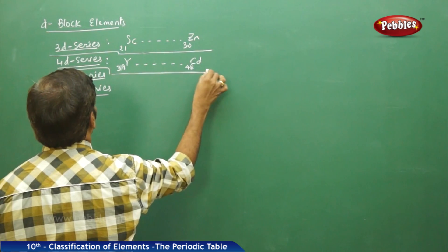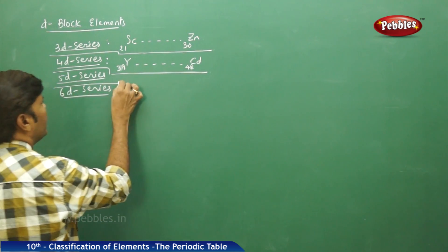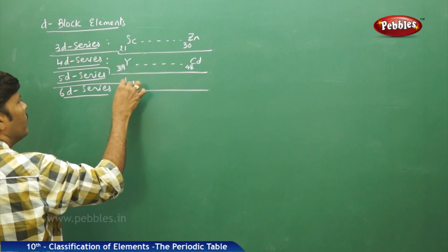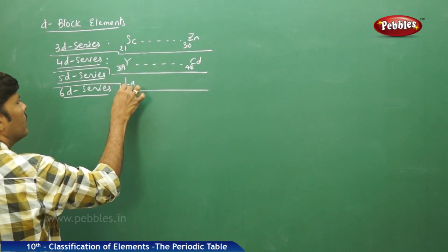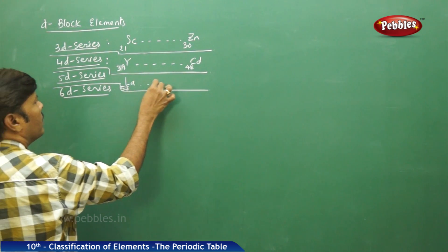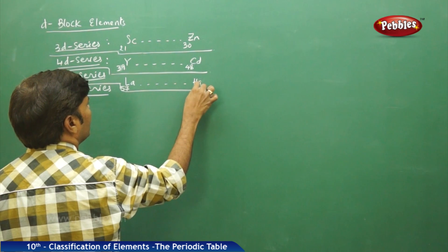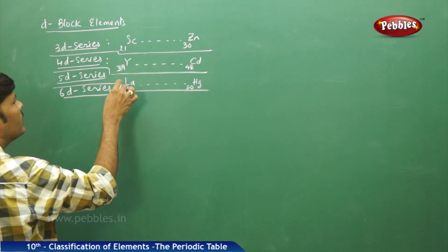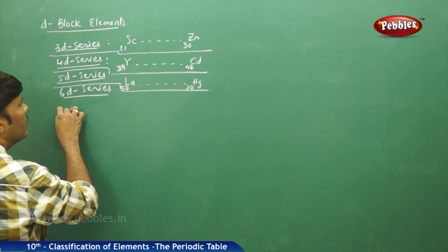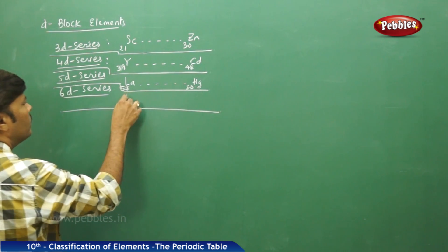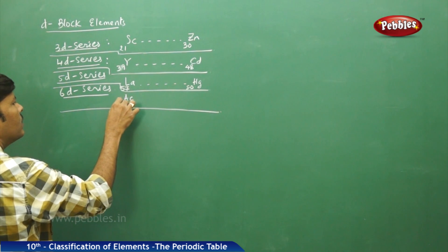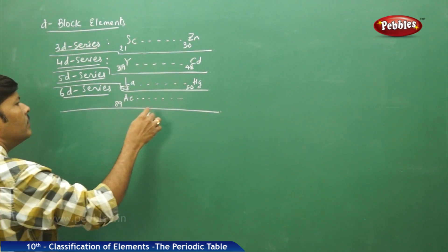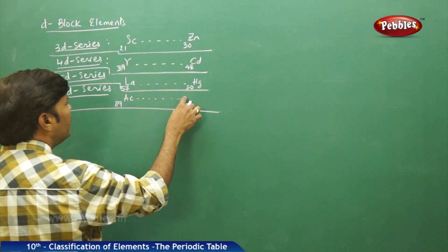For 5d series elements, it starts with lanthanum (57) and ends with mercury (80). For 6d series elements, it starts with actinium (89).